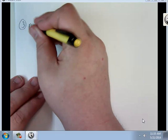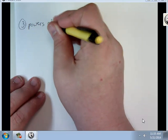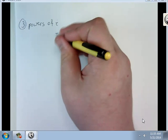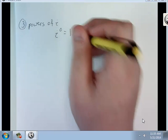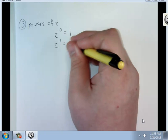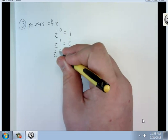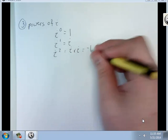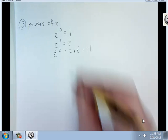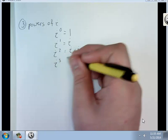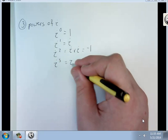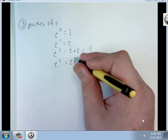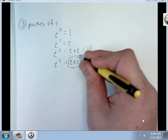Powers of i. Just like exponent rules, i to the 0 is still 1, and i to the 1st is i. And like we just did, i to the 2nd equals i times i, which is negative 1. Now, i to the 3rd is i times i times i. We know this is just negative 1. Negative 1 times i is just negative i.